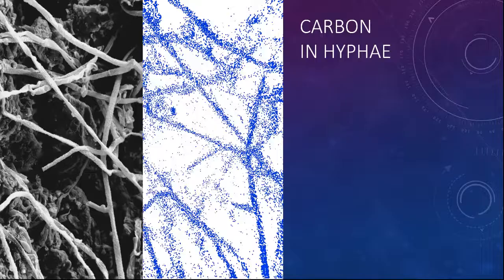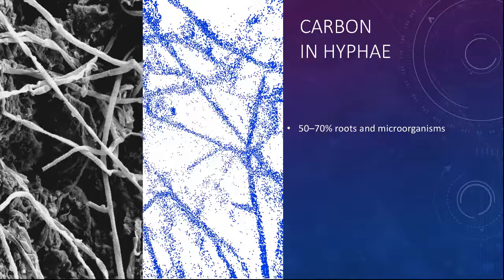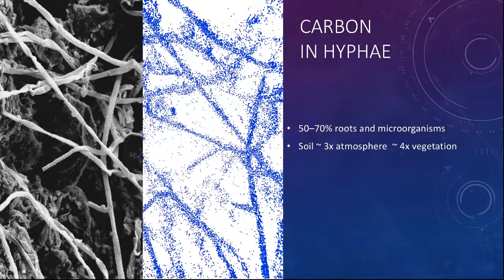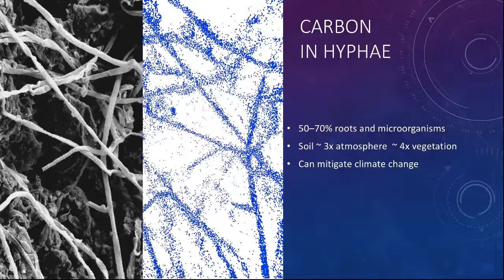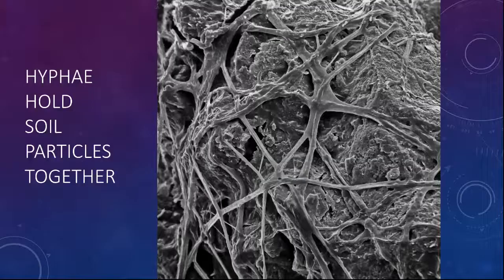Here are some hyphae with carbon in them labeled — you can see the carbon there. It is reported that up to 70% of the carbon coming from a plant is not within its trunk so much but within the roots and the microorganisms surrounding the root system. Soil has three times as much carbon as the atmosphere and four times as much as vegetation. Therefore it is a perfect way to mitigate climate change by improving this carbon sequestration into soils.